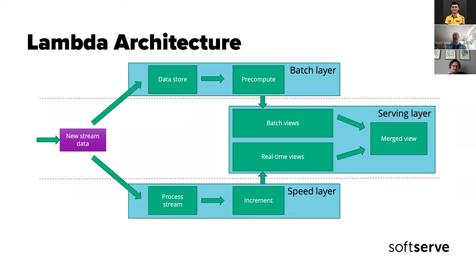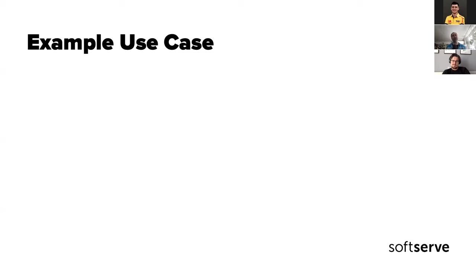That's pretty much it on the theoretical level. Lambda Architecture works as follows: we have a new stream of data, an immutable data store which is periodically computed into batch views, a separate processing stream which incrementally updates real-time views, and both the batch view and real-time view are merged and served to the user. I also want to share a use case based on my own experience.